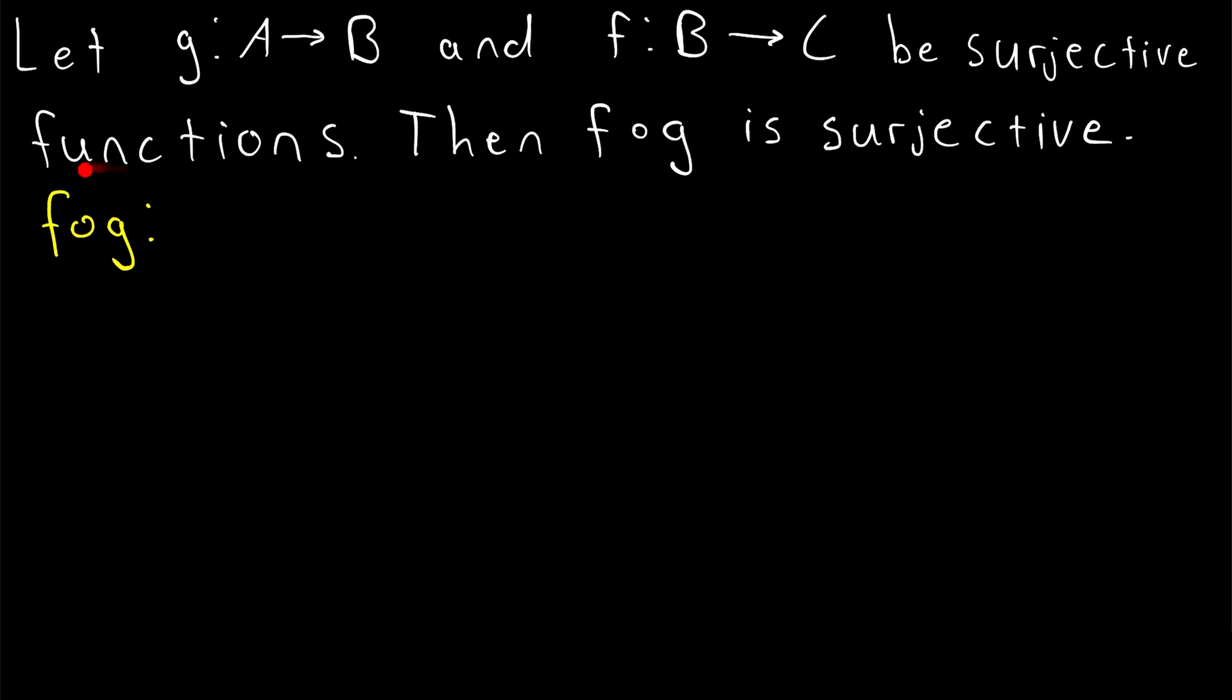So if we plug an element into this function, it's going to go through the function G first, and then it's going to go through F, which means the domain of this function is the domain of G. That's where elements start in the set A, and the codomain of this function is the codomain of F. That's where elements will end. So that's the set C.